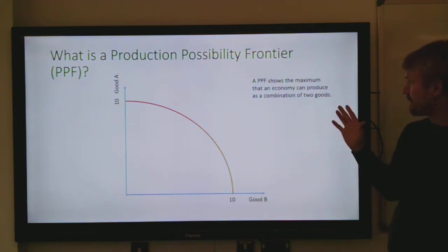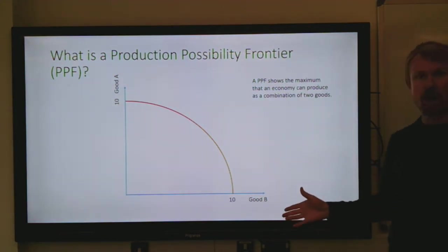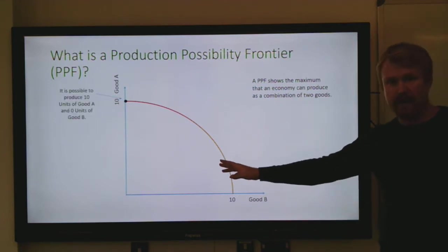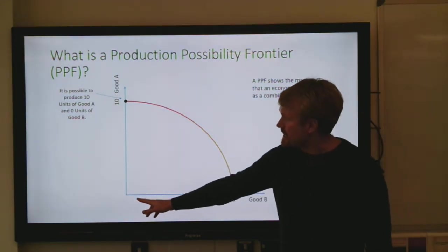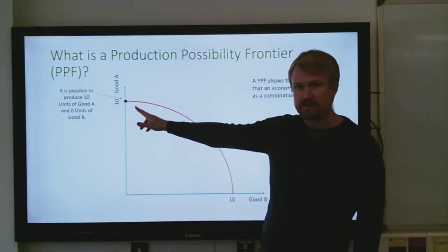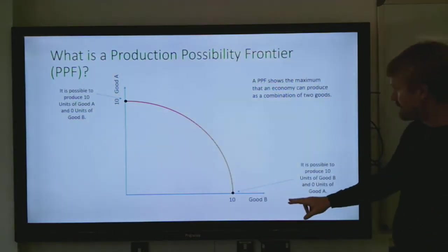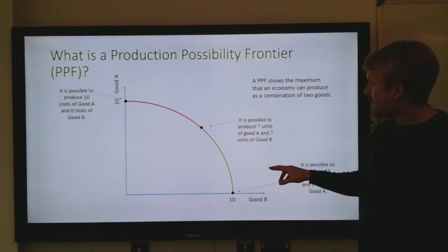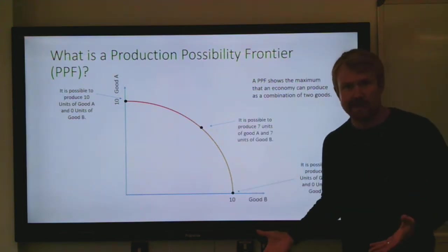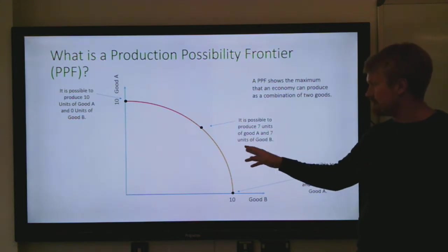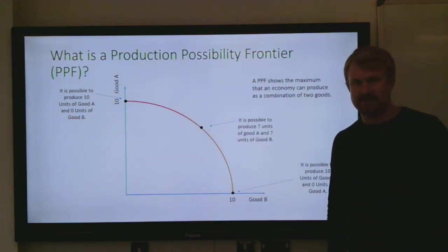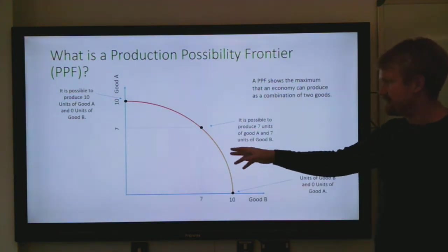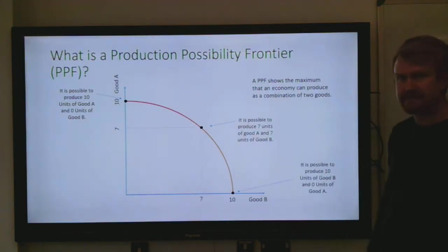The maximum that an economy can produce is a combination of two goods. If we didn't produce any of good B, it would be possible to produce 10 of good A. Whereas if we didn't produce any of good A, it would be possible to produce 10 of good B. And somewhere in between, say on this point here, it's possible to produce seven units of good A and seven units of good B — labeled seven and seven.